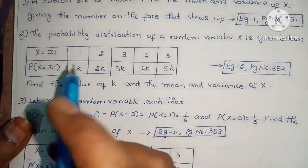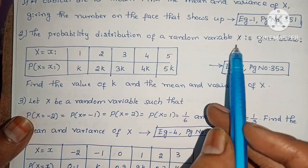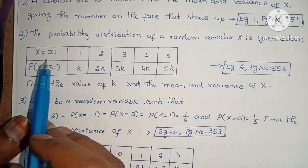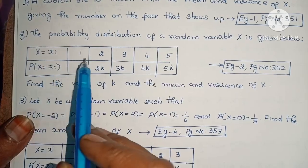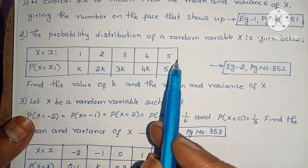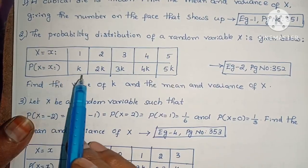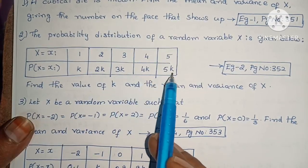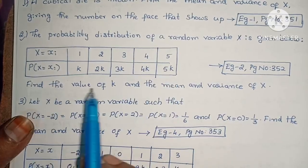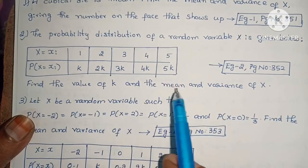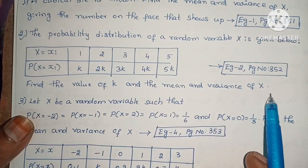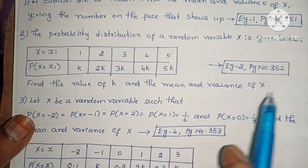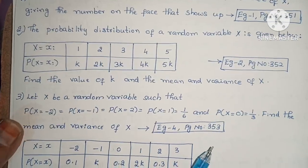The probability distribution of a random variable x is given by: x = 1, 2, 3, 4, 5 and P(x = xᵢ) = k, 2k, 3k, 4k, 5k respectively. Find the value of k and the mean and variance of x. Example 2, page number 352.